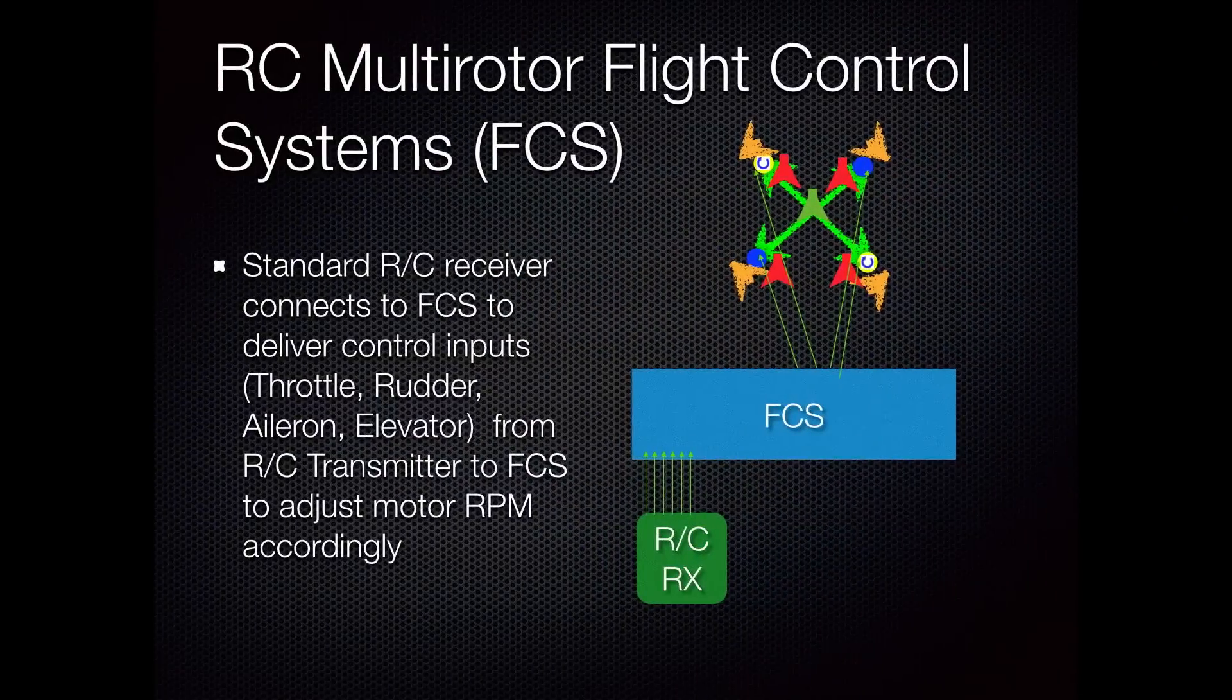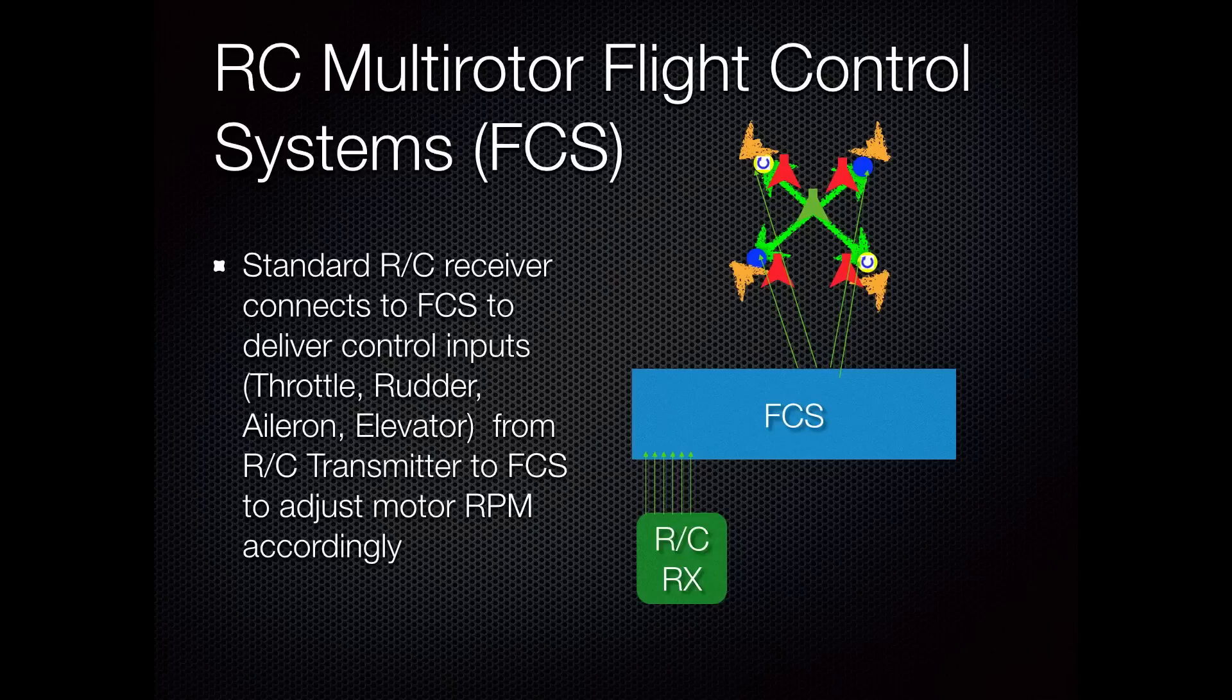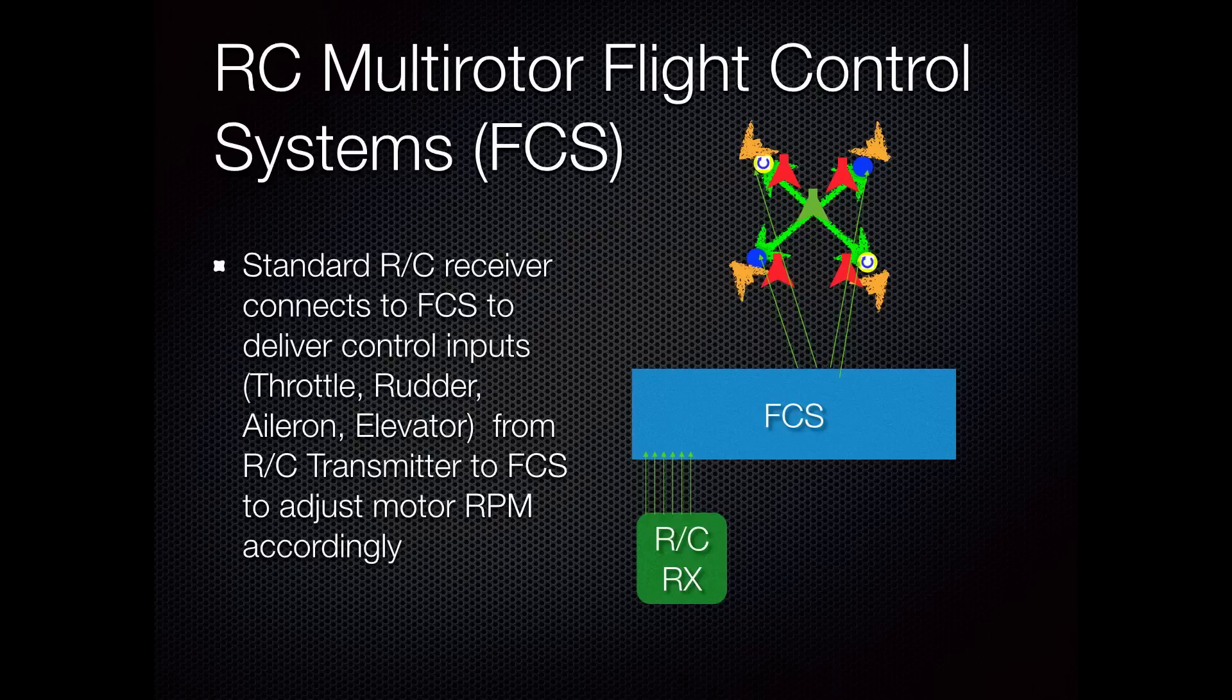These flight control systems also have the capability to add other sensors or other devices to them. The most common one that you see, and is important, is the radio control receiver. What that does is it takes the signals that are transmitted by your Mode 2 transmitter that you hold in your hand, receives them, and passes those as inputs to the flight control system.